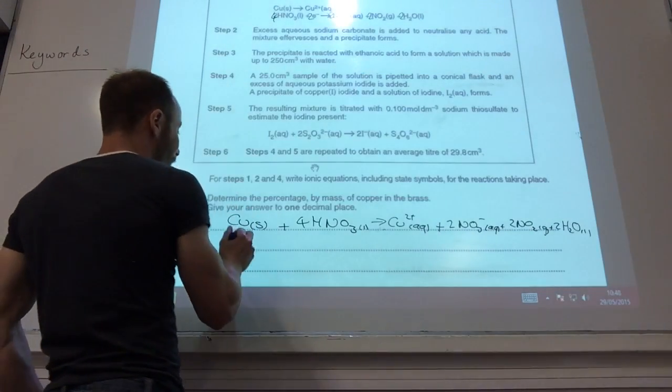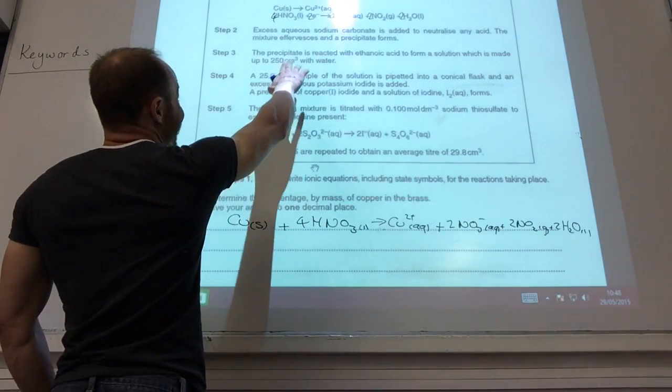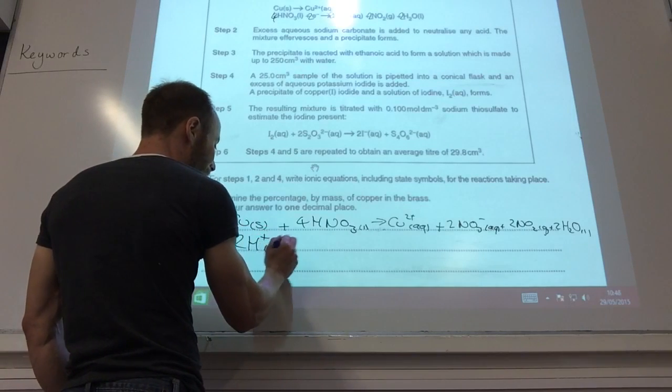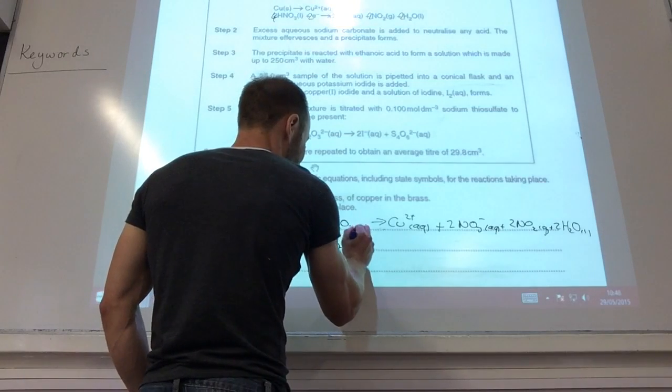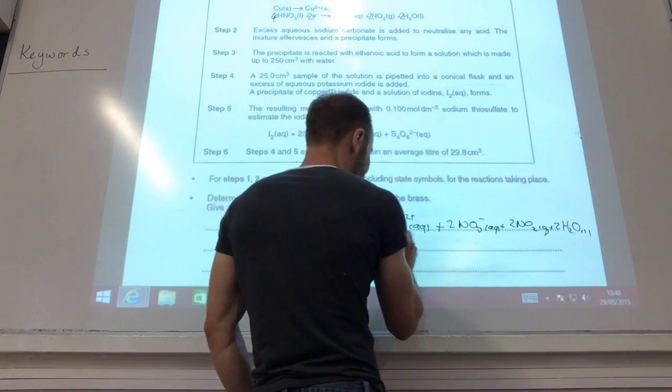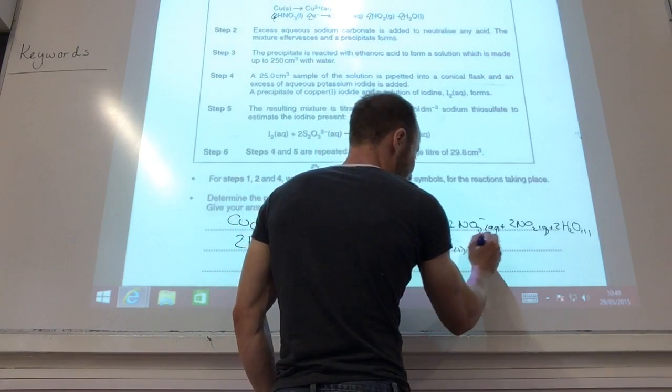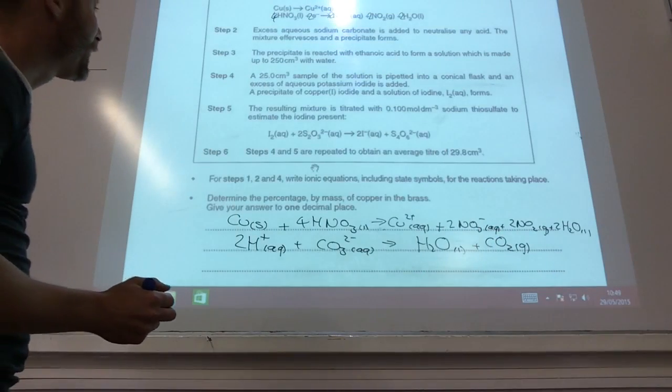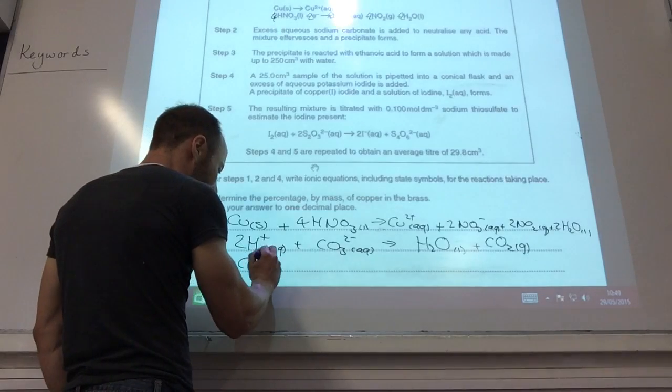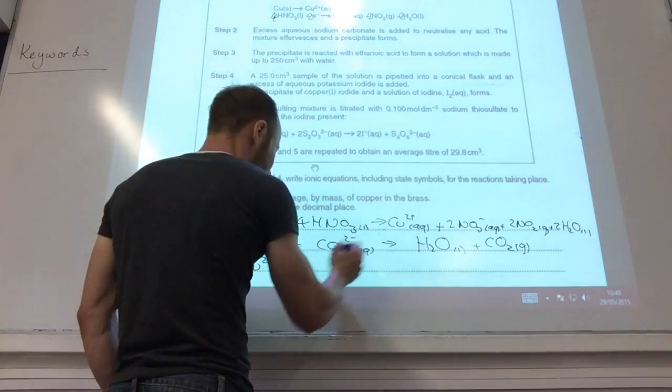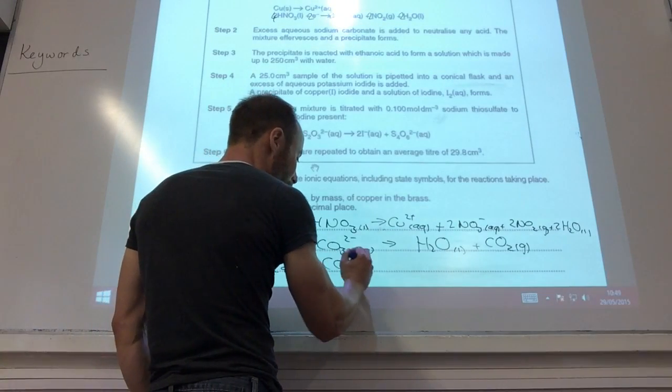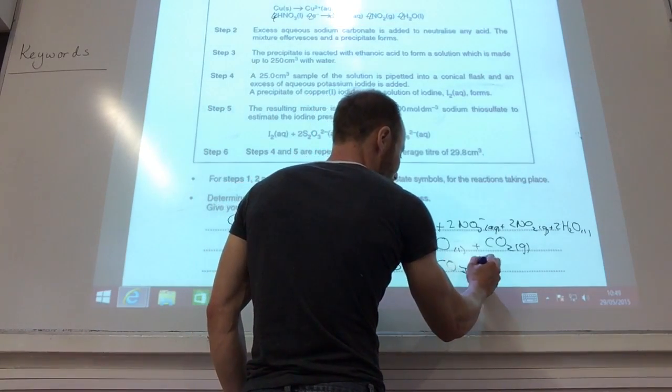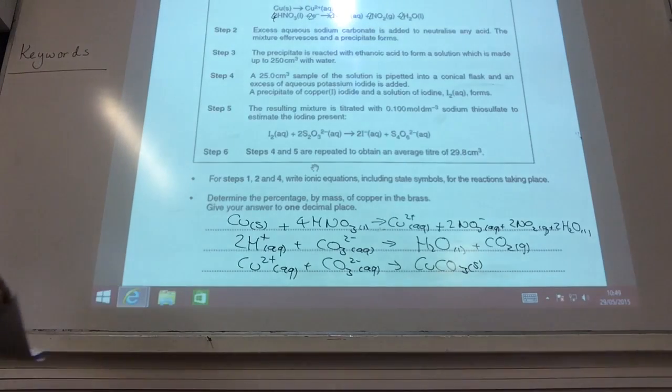So the next one, I need to write the steps two and three. Excess sodium carbonate is added to neutralize any acid. So that is your box standard neutralization of a carbonate to produce water and carbon dioxide gas, which is why it fizzes. A precipitate forms. So you've got copper ion, copper two plus ions, knocking around with the mate there. You've added a whole load of carbonate ions, like so, so it will produce copper carbonate solid, like so.